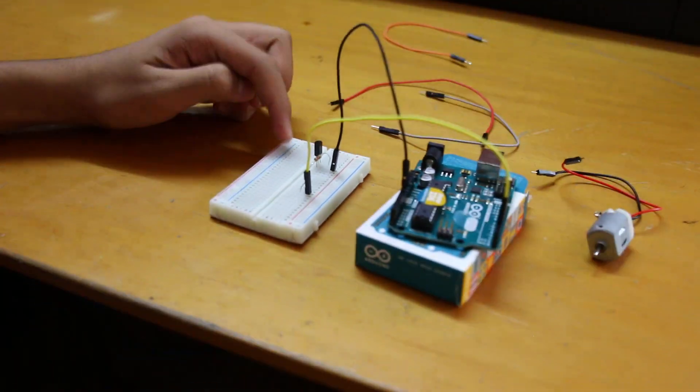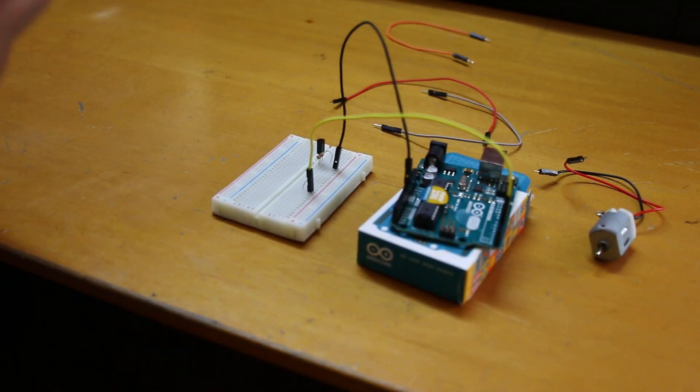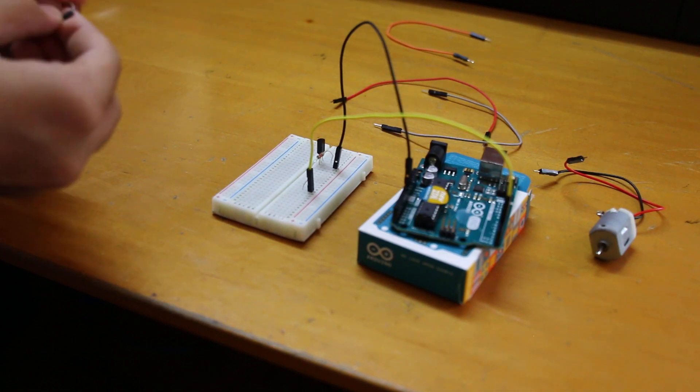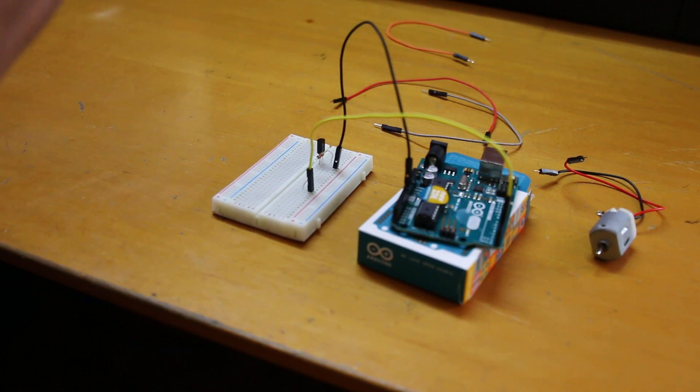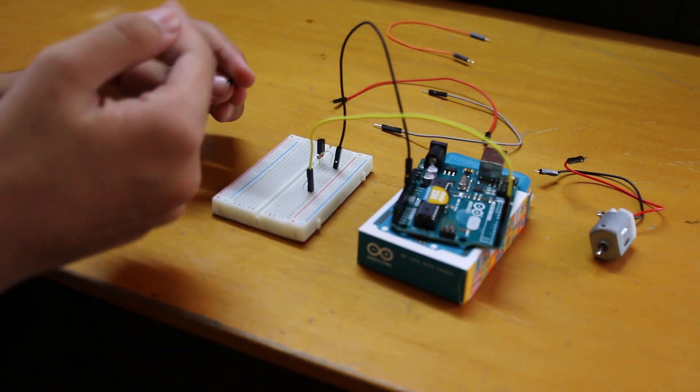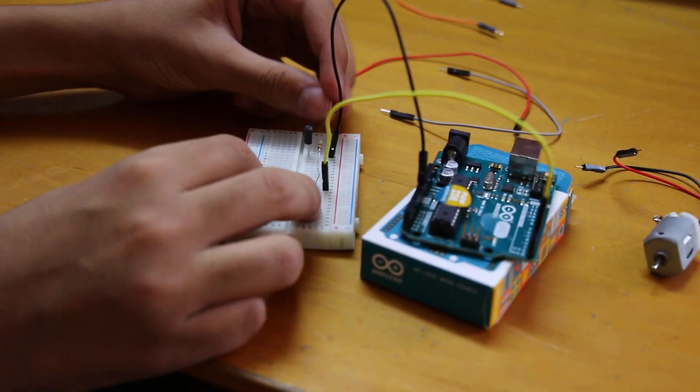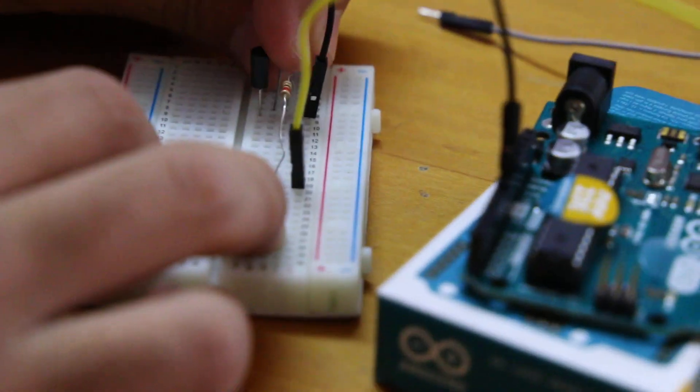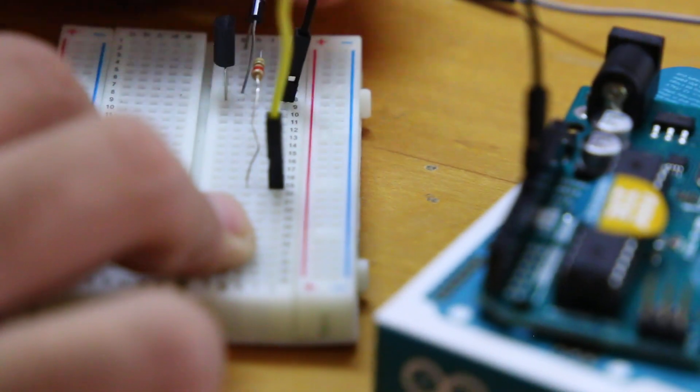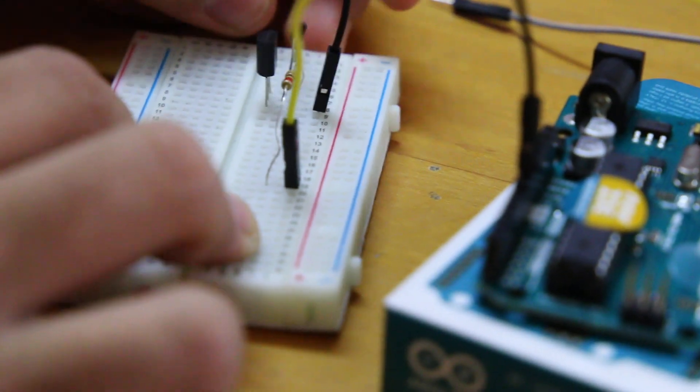And now we're going to connect to the collector. We're going to connect the diode, which is going to go over there. So the diode, what it does, it flows current in one way and not the other. So we put it with the collector, and put it over here.